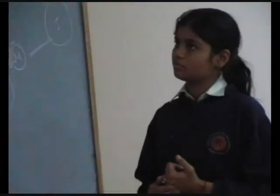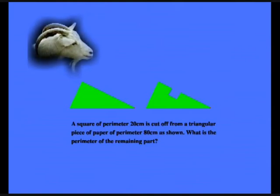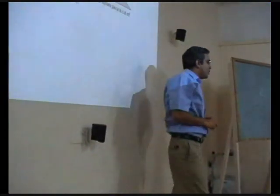One way to clear such misconceptions is to get students to think of a real-life problem and connect it to the concept. We made students think of the triangle as an island, and asked them to imagine a goat walking around that triangular island. We asked them to figure out in which case the goat would have to walk more. The goat starts walking from one point, walks around the border of the whole island, and comes back. How much does it walk? 80 cm.